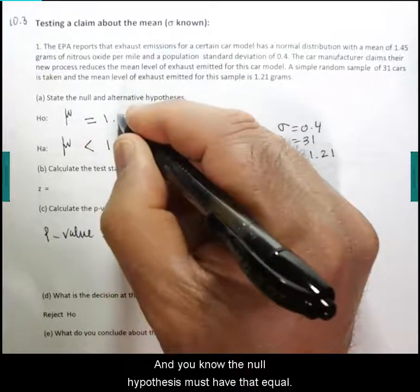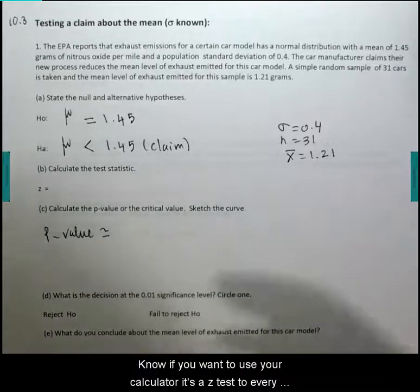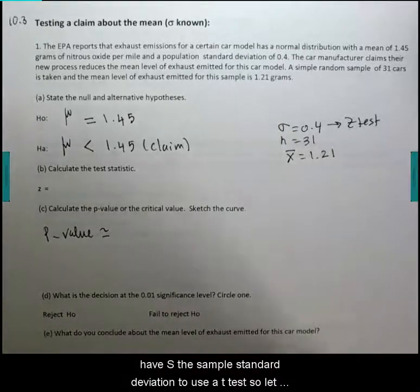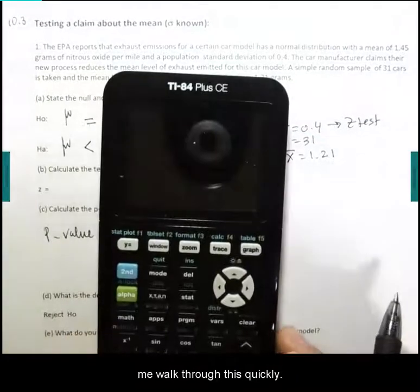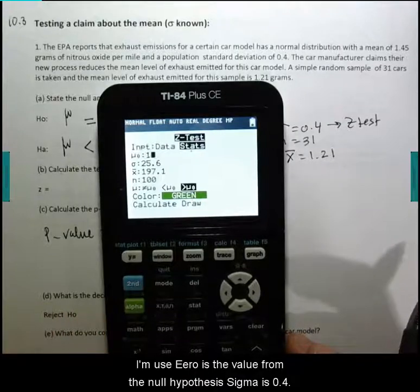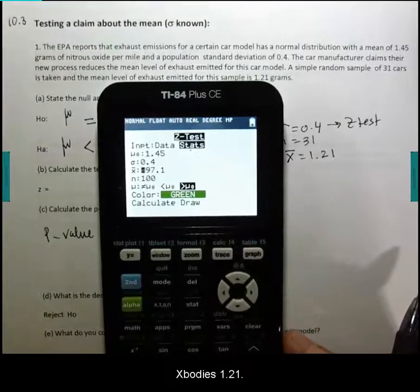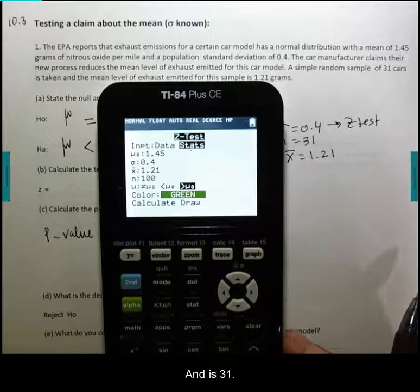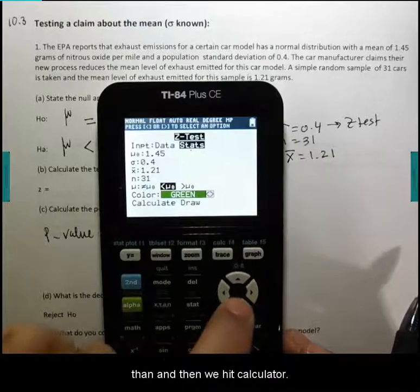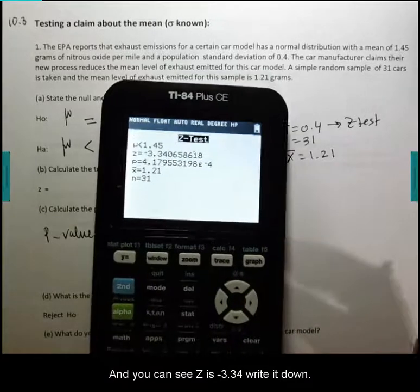The null hypothesis must have the equal sign. If you want to use your calculator, it's a z-test. Every time you have sigma you use a z-test, and when you have s, the sample standard deviation, you use a t-test. Let me walk you through this quickly. Z-test: mu zero is the value from the null hypothesis, sigma is 0.4, x-bar is 1.21, n is 31, and the sign from the alternative hypothesis is less than. Then we hit calculate and you can see z is negative 3.34.